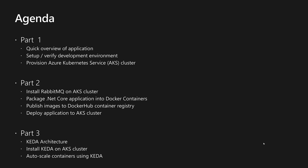In part two, we will extend this and install RabbitMQ on the AKS cluster. We will package the .NET Core application into Docker containers. We will publish those images to Docker Hub container registry and deploy the application onto the AKS cluster.